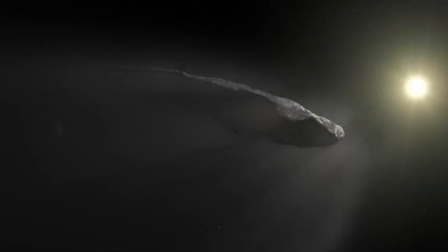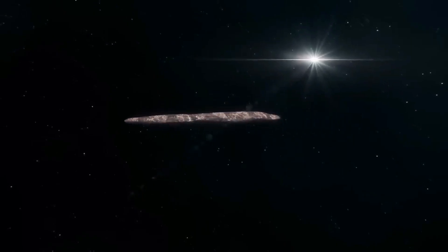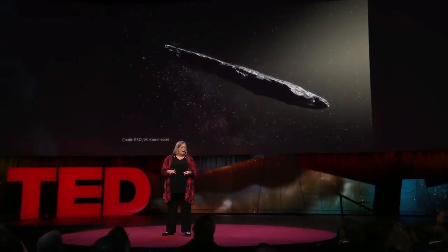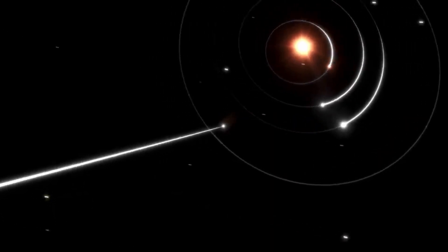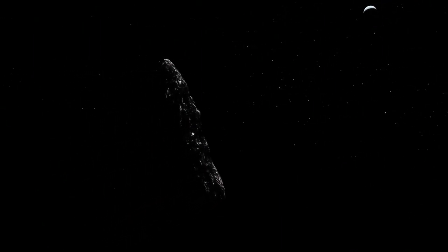The comet, whose name means a messenger from afar arriving first, actually sped up in the second half of its path, which was faster than what the sun's gravity could explain. Even the most logical scientists started to think that the object might be a spaceship from another planet moving quickly through our solar system on its own.